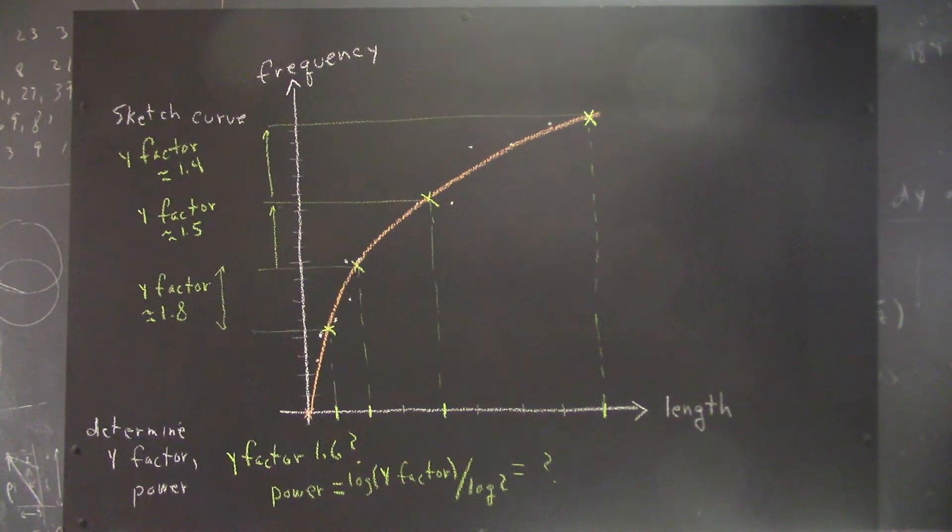So if the Y factor is 1.6, what's the power? The power is the log of the Y factor over the log of 2. You can punch the buttons in your calculator once we've got our estimate of the Y factor of 1.6 to work that out.